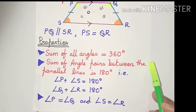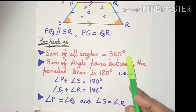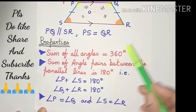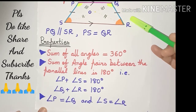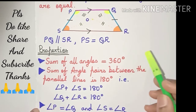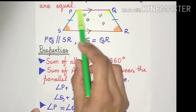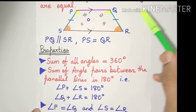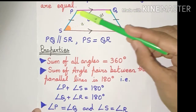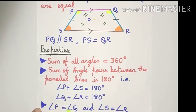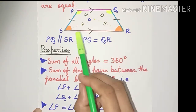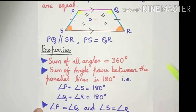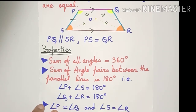Coming to the properties of an isosceles trapezium: since every trapezium is a quadrilateral, the sum of all angles is 360 degrees, and the sum of angle pairs between the parallel lines is 180 degrees. In addition, the angle pairs adjacent to each parallel line are also equal. So the angles adjacent to line PQ are angle P and angle Q, which are equal. Similarly, the angles adjacent to SR are angle S and angle R, and these two are also equal.